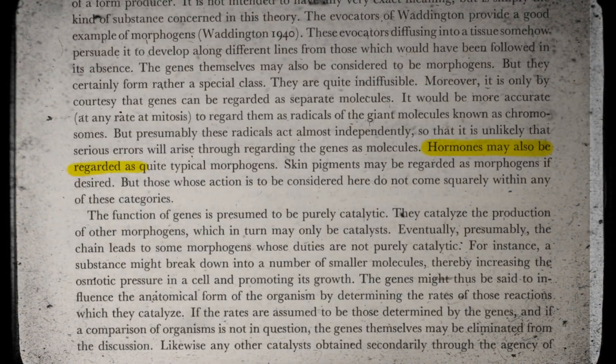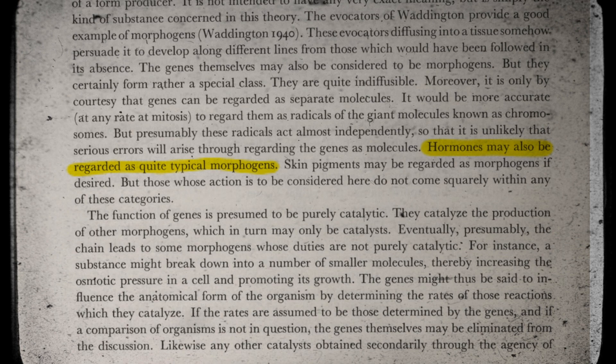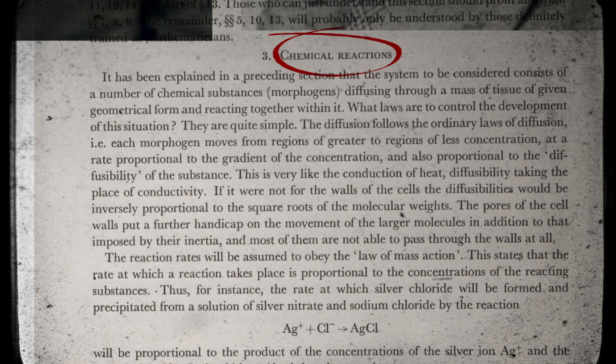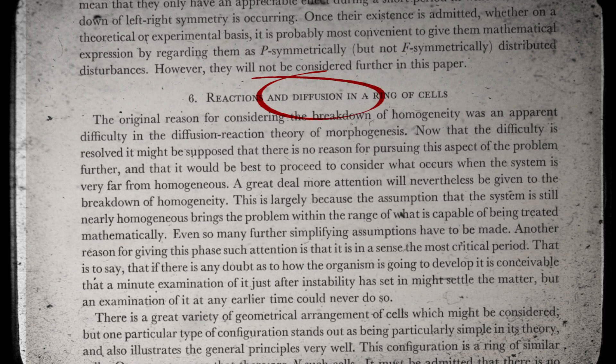He proposes that there are chemicals, for example hormones, proteins or acids, called morphogens, which react with each other. However, only reaction doesn't give us patterns, reactants become products and that's it. So he adds diffusion, which in itself also doesn't create patterns, but combining the two does, as we will see later.